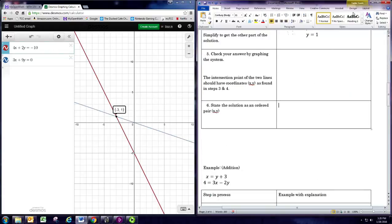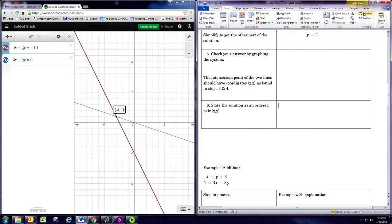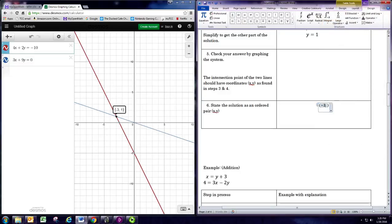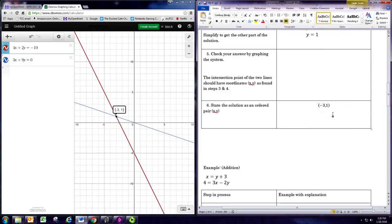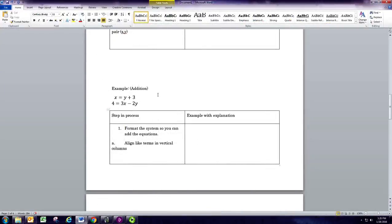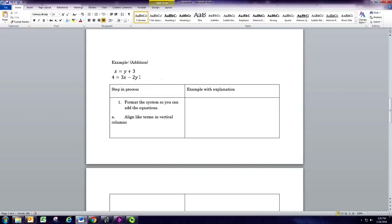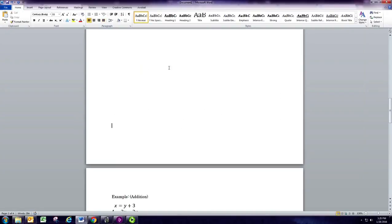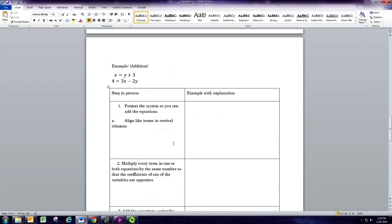I'm going to state your solution. Is the ordered pair negative 3 comma 1. So this is one way to do it using the substitution method. Let's take a look at the other method, the addition method. We have a different set of equations. And the first step with the addition method is to actually get it formatted right.